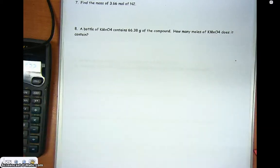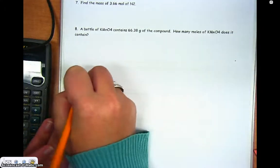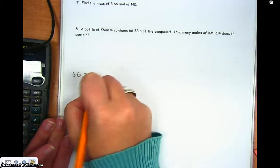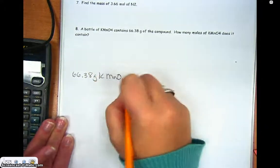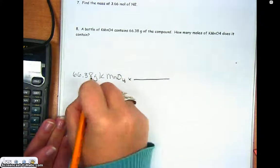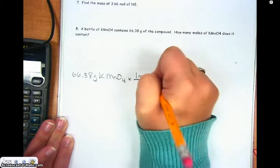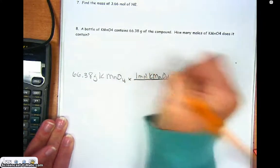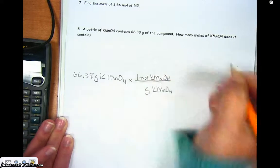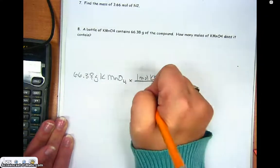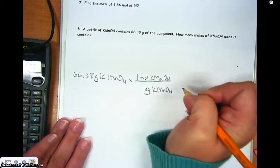Okay, so in this case, I'm going from grams to moles. So I'm going to just start by writing what I have, 66.38 grams of potassium manganate. And I want to go from grams to moles. So I know one mole of potassium manganate is some number of grams of potassium manganate. So I'm going to look up on the periodic table and add up and figure out what my mass of potassium manganate is.